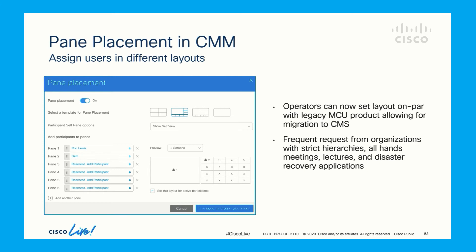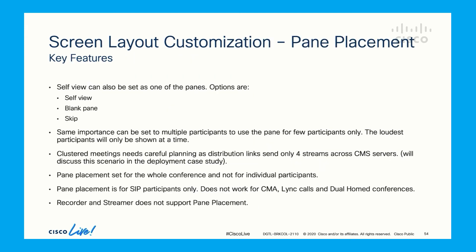This is the screenshot of CMM configuration for pane placement. You can choose the layout, enable self view, and add participants in the pane. Self view can be placed in one of the panes, which would give a consistent view for all the participants. You can assign the same pane for multiple participants, which would result in switching multiple participants for the same pane based on who spoke recently. This can be done by setting some importance to multiple participants. Keep in mind that distribution links carry only 4 participants, which will change the pane placement arrangement for participants on different CMS servers. Pane placement works for SIP participants only, and recorder and streamer are not supported.